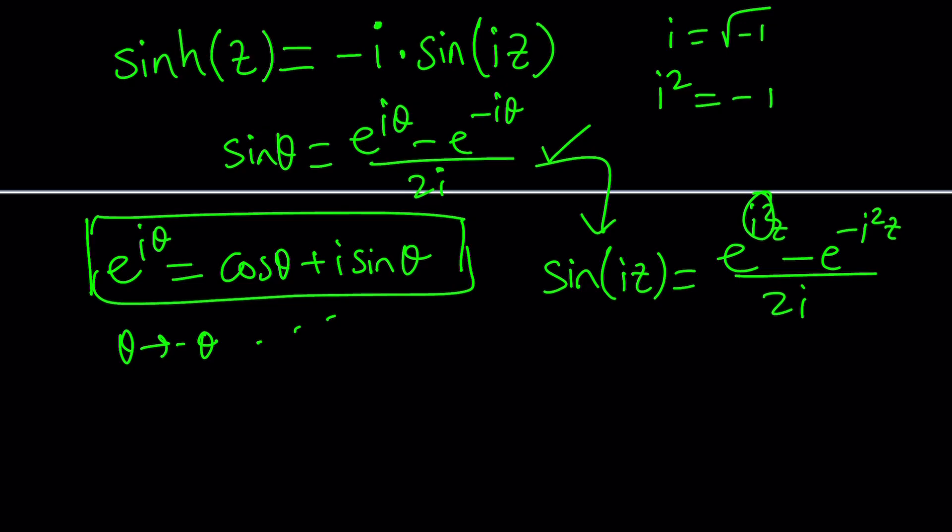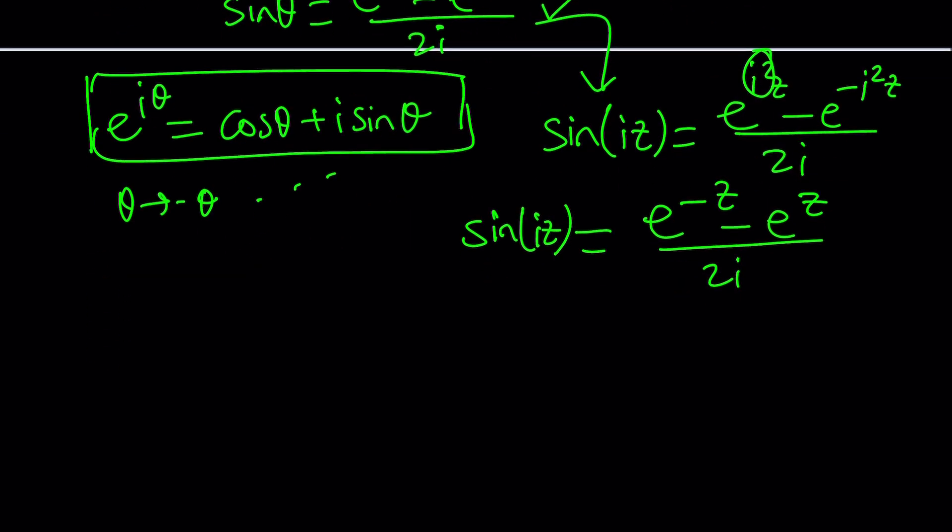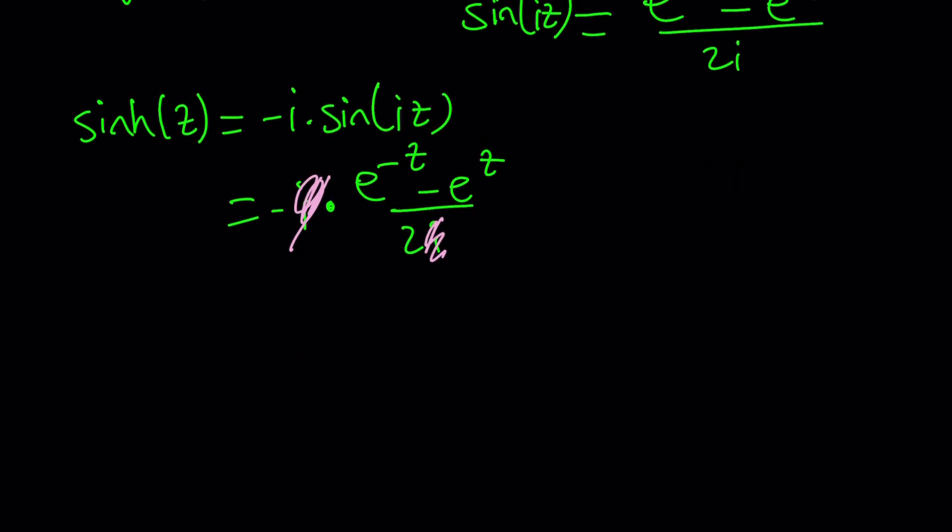Great. So i squared is negative 1. That means we're going to get i e to the power negative z minus e to the power z divided by 2i. That's just sine iz, though, right? We need to multiply it by negative i. So our expression is going to be sinh hyperbolic. Hyperbolic sine of z is negative i times sine of iz, and that is negative i times e to the power negative z minus e to the z divided by 2i. Now, there is definitely a better way to do this, which I'll tell you about, but the i cancels out, and we end up with a negative. So we're going to negate that, which will give us e to the z minus e to the negative z divided by 2.